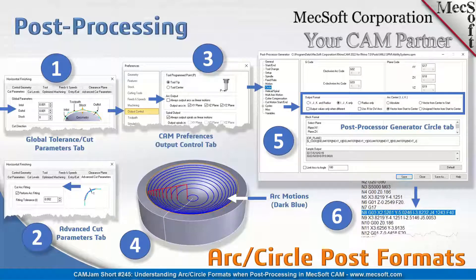Another thing we touched upon in the previous slide — things that can go wrong — we're going to talk about arc circle post formats. If your machine supports arc motions, the G02s and G03s, and you want to enable those, you'll get a better surface finish because it's outputting as an actual arc motion, not a bunch of linear motions that are faceted around a certain arc area.